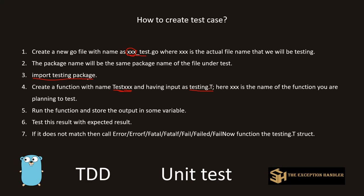This test function has a special input parameter of type `*testing.T`, a structure that comes from the testing package we imported. You then execute the function you want to test, store the output, and compare it against an expected result. If you don't get the expected result, you call one of the error functions from the `t` structure. We'll discuss all those functions in another video — for this video we'll be using `Error` and `Errorf`, and in the next video we'll cover `Fatal` and `Failed`.